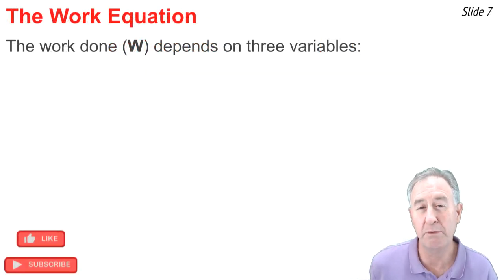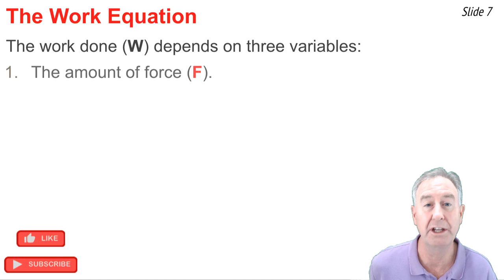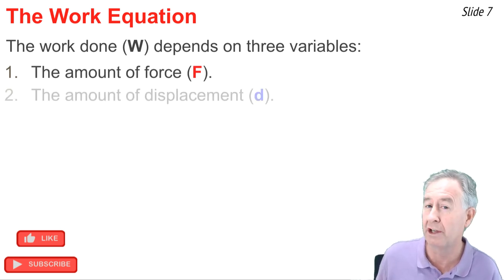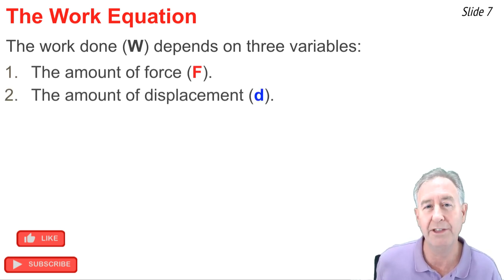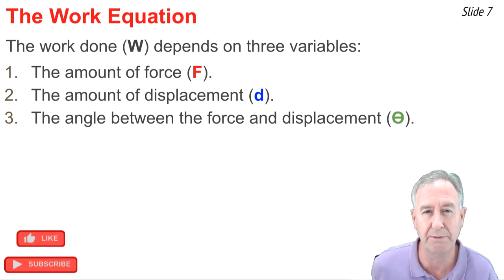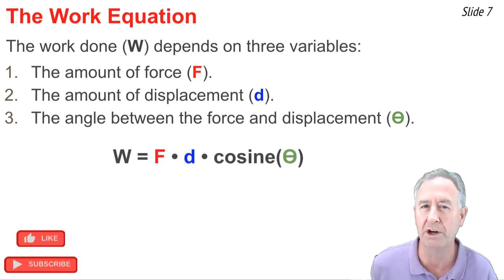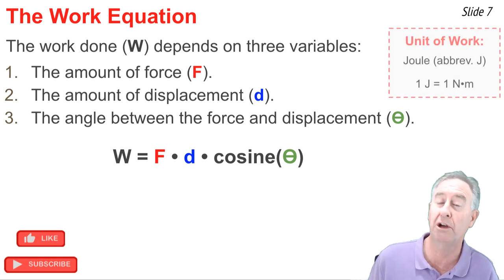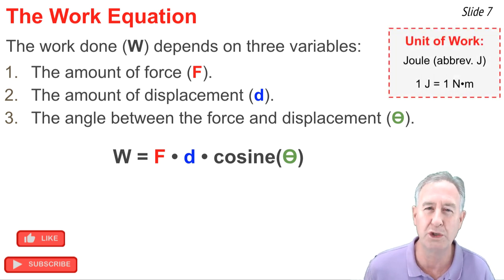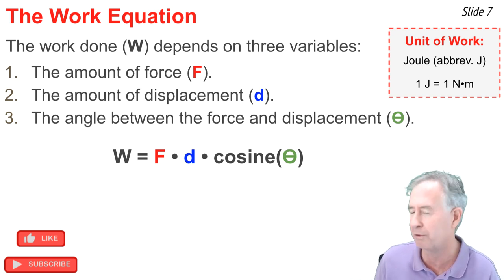Mathematically, the amount of work done upon an object depends upon three variables. It depends upon the amount of force, the amount of displacement, and the angle between the force vector and the displacement vector. We can express these dependencies with the equation: work W equals force F times displacement d times the cosine of the angle between the force and the displacement vectors. The unit for work is the joule, abbreviated J. One joule is equal to one newton times one meter, as inferred by this equation.